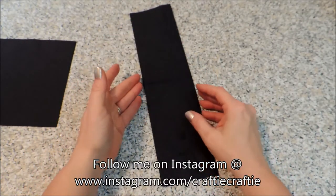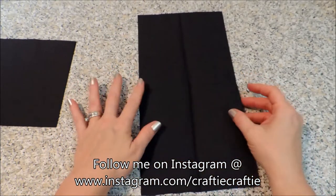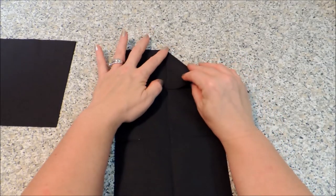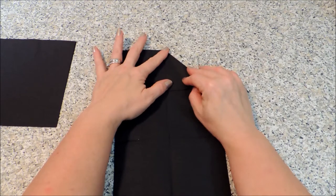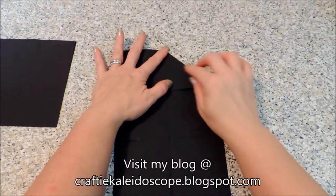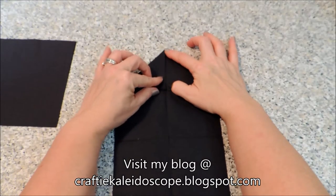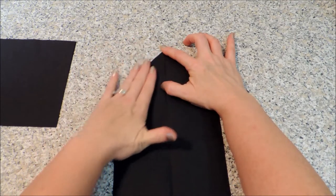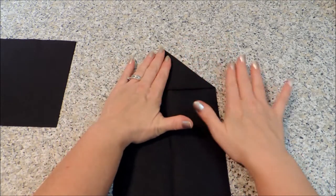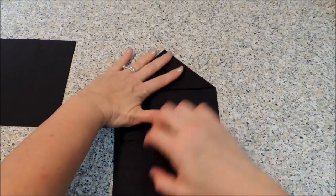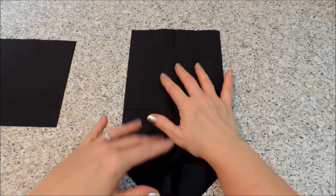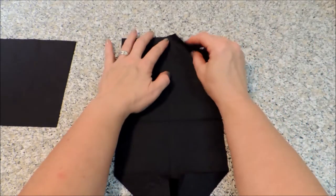Once you get that crease, open it back up and we're going to use that crease as a guide. We're just going to fold our corners down to meet right along that crease. This is going to create the point of our black cat's ears. Spin it around and do the same thing on the other end.